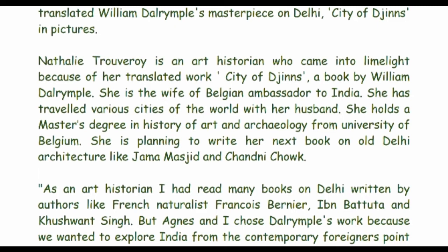Natalie Travaro is an art historian who came into limelight because of her translated work 'City of Djinns,' a book by William Dalrymple. She is the wife of the Belgian ambassador to India and has traveled various cities of the world with her husband. She holds a master's degree in history of art and archaeology from the University of Belgium. She is planning to write her next book about Old Delhi architecture, like Jama Masjid and Chandni Chowk.